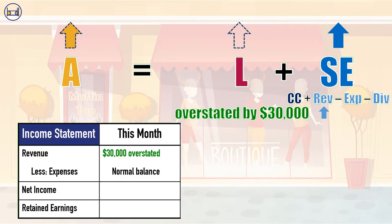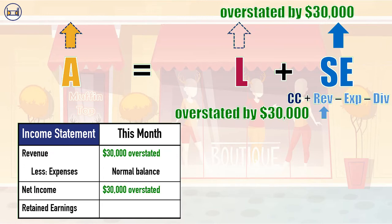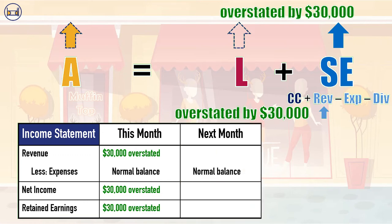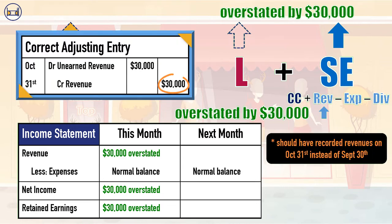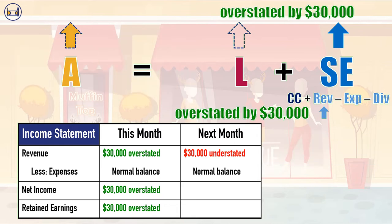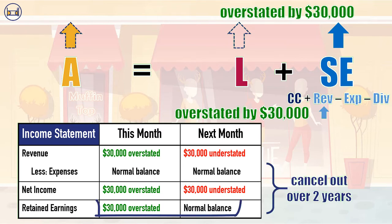So this month, it will have overstated its revenues by $30,000. This will cause net income to be overstated by $30,000, and retained earnings to be overstated by $30,000. Next month, on October 31st, the company will throw the event but will not record any revenue as it otherwise should have. So its revenues will be understated by $30,000, causing net income to be understated by $30,000, and retained earnings to return to its normal balance.